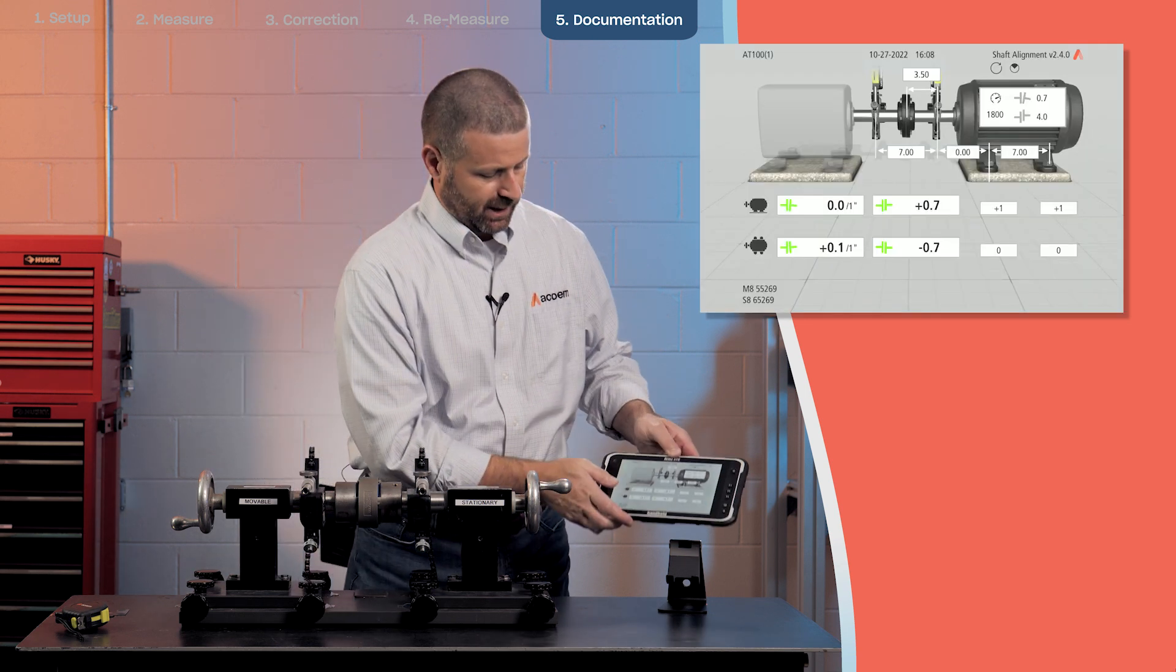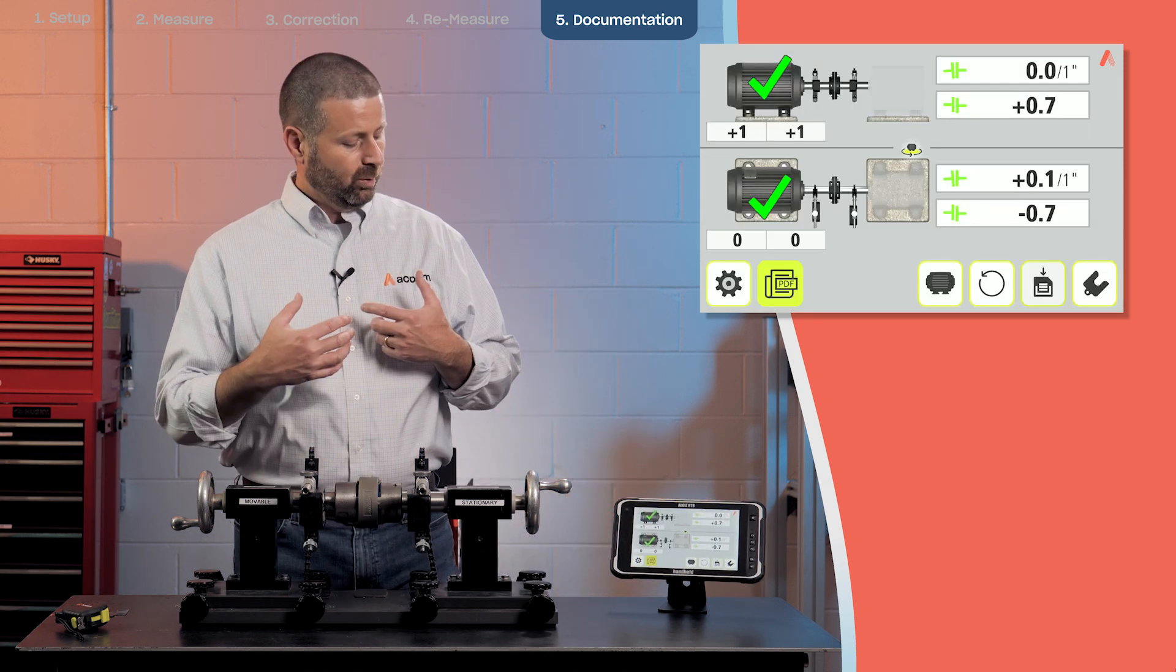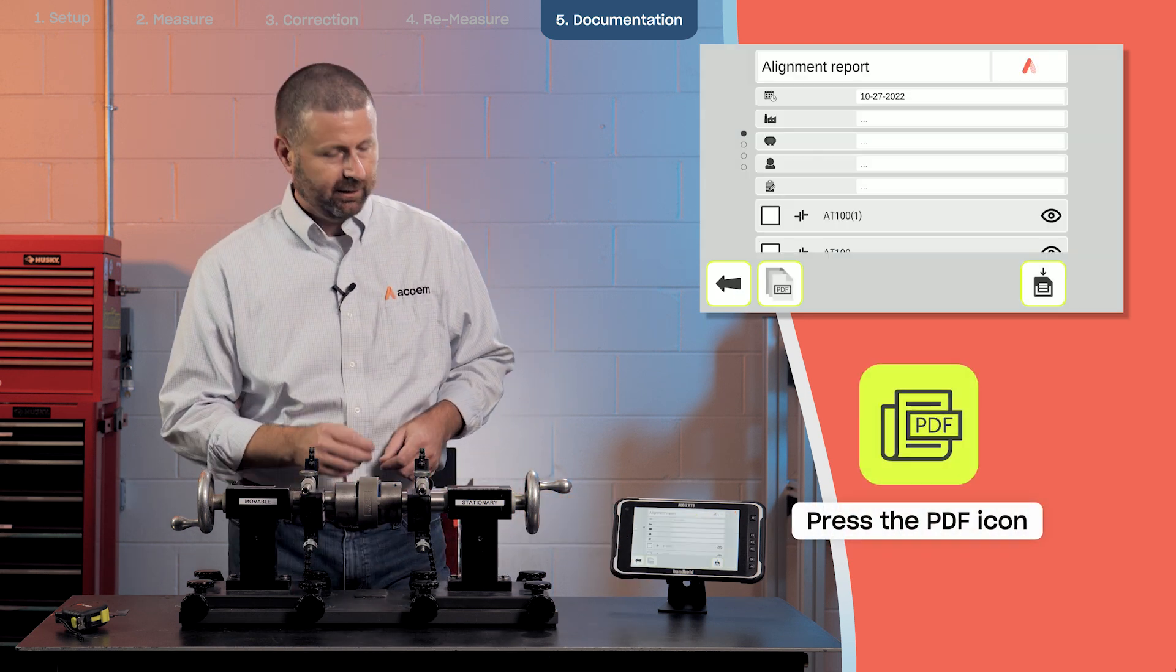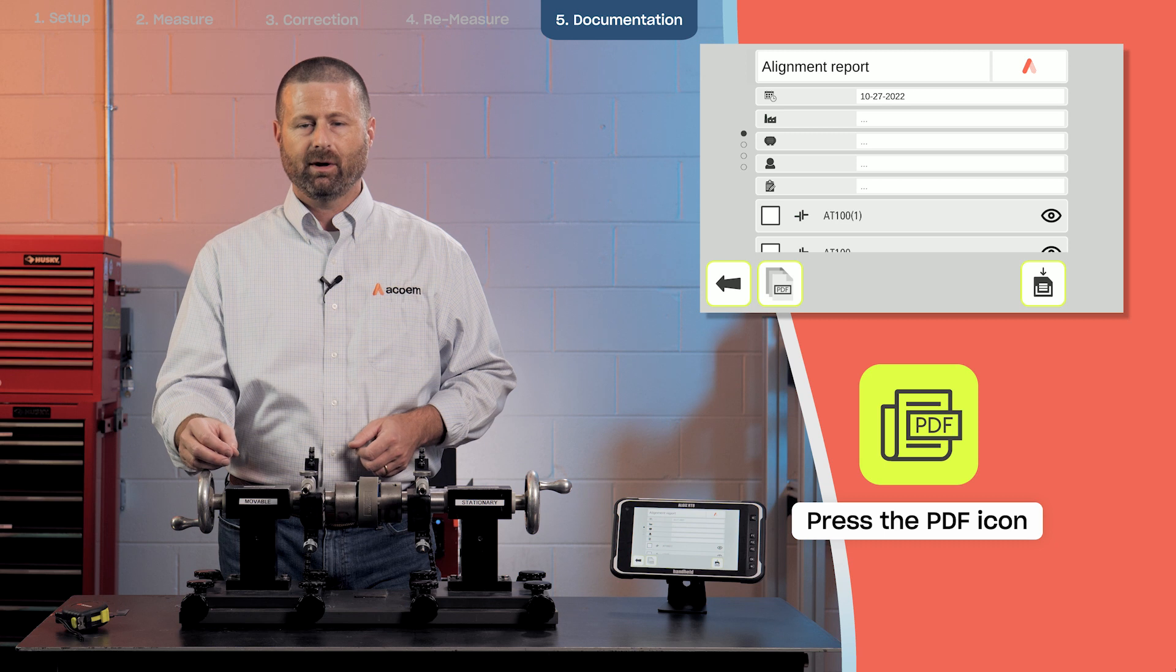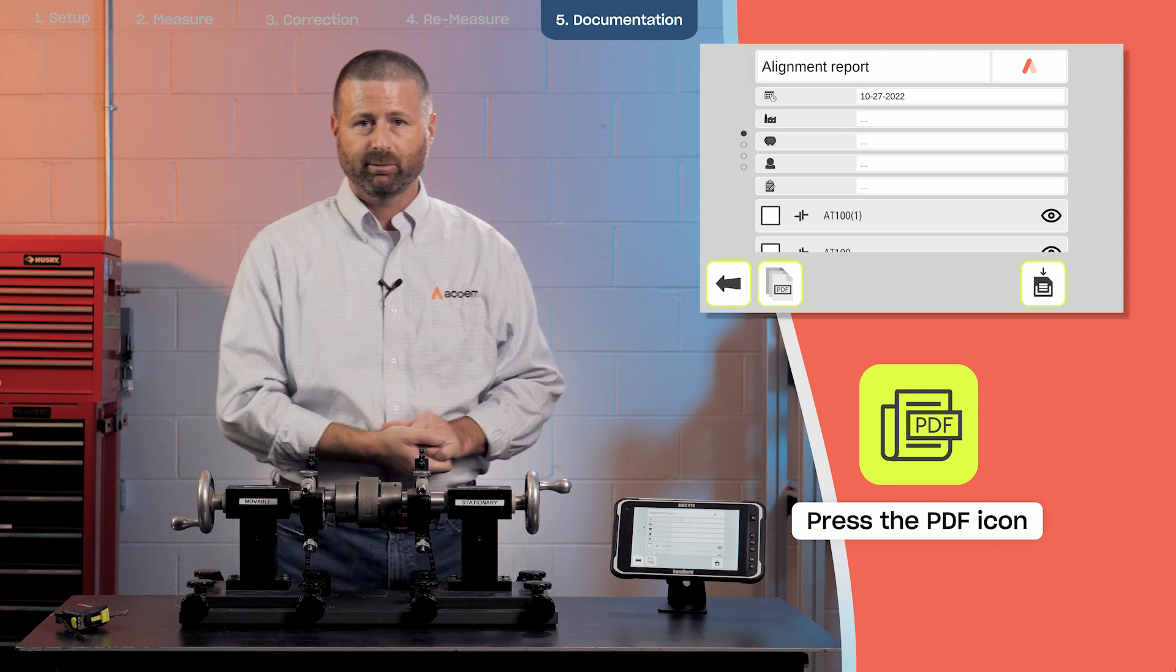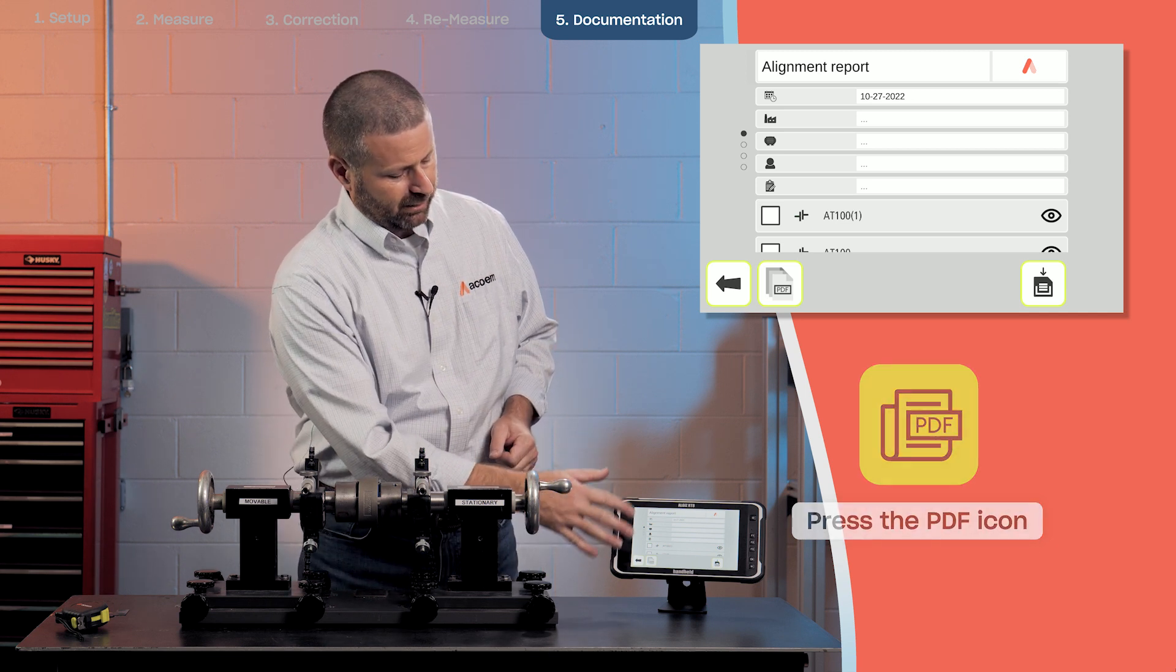All right, so that saves our alignment. And then we're going to produce our final report by combining the shaft alignment with, if we had saved data from a soft foot adjustment beforehand, we can do that as well. So in generating the PDF report...